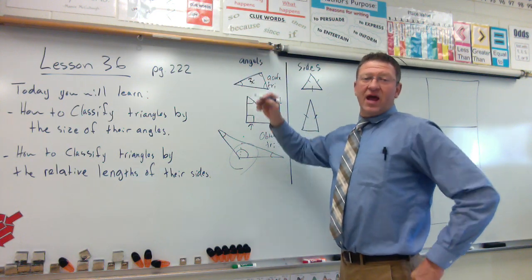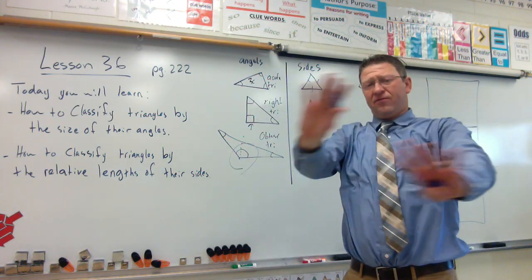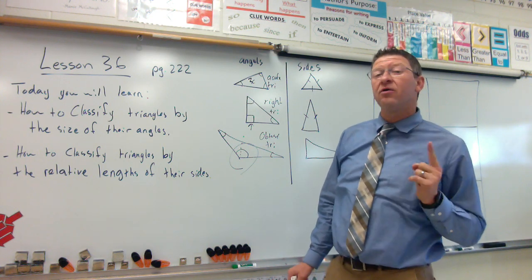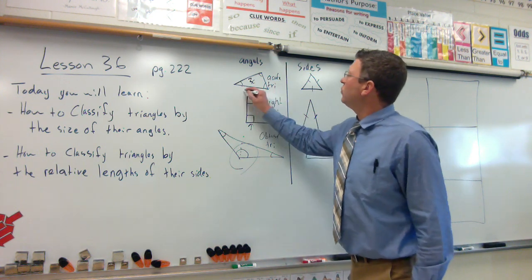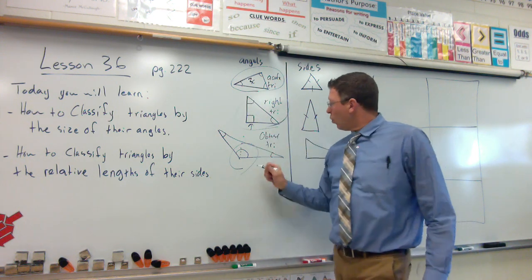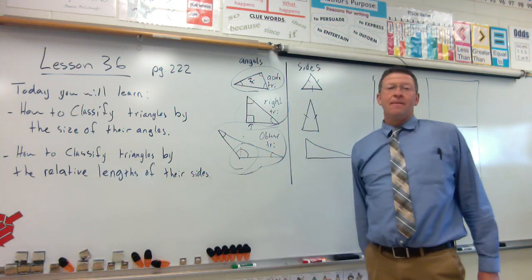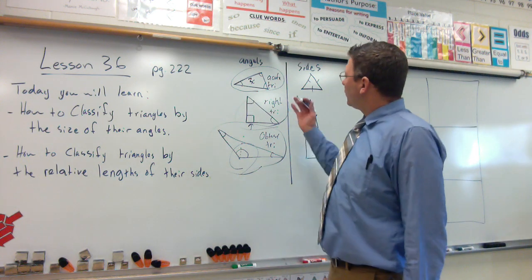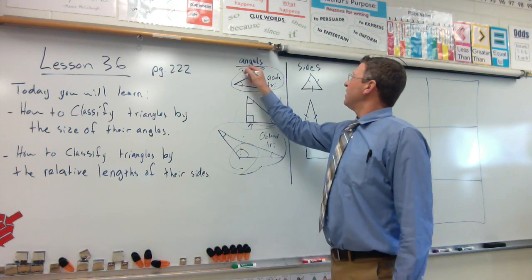So, in order to be an acute, you have to have three. Every single triangle you ever find will have at least two acute angles. It's that third angle that makes a difference. Three acute makes you an acute triangle. One right angle makes you a right triangle. One obtuse angle makes you an obtuse triangle. So these are classified by their angles.